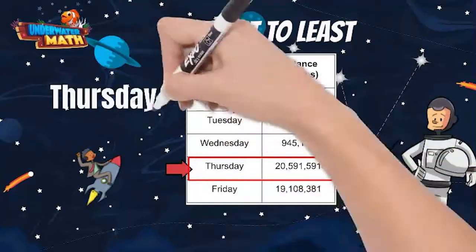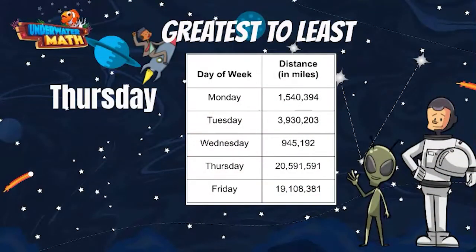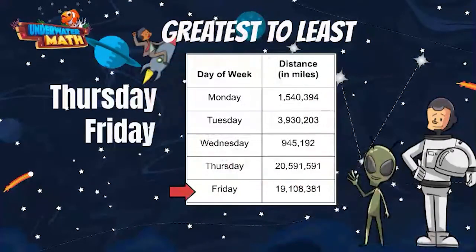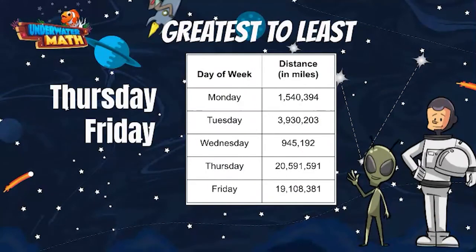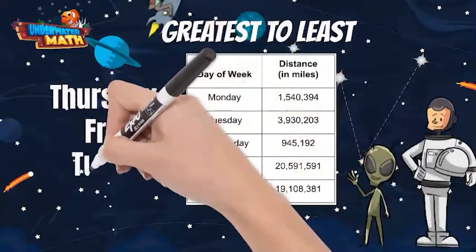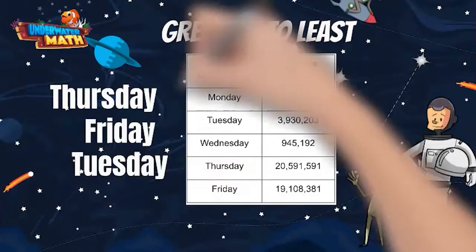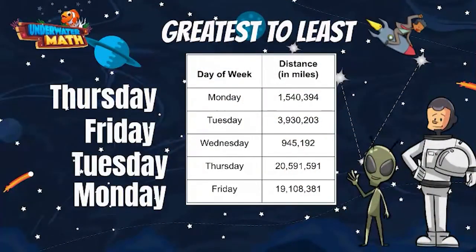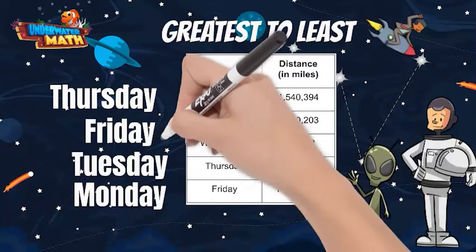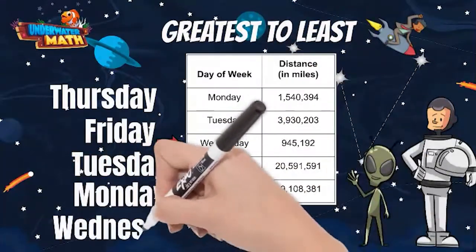Thursday and Friday both have digits in the 10 millions place value, but 2 is greater than 1, and Marcus traveled further on Thursday. This means Friday is second in our list. We have two numbers that start in the millions place, Monday and Tuesday. However, 3 is greater than 1, which means Tuesday shows the next greatest distance traveled, followed by Monday. Finally, we have the smallest number with the least amount of place values. Wednesday comes last on our list because it is the smallest number.